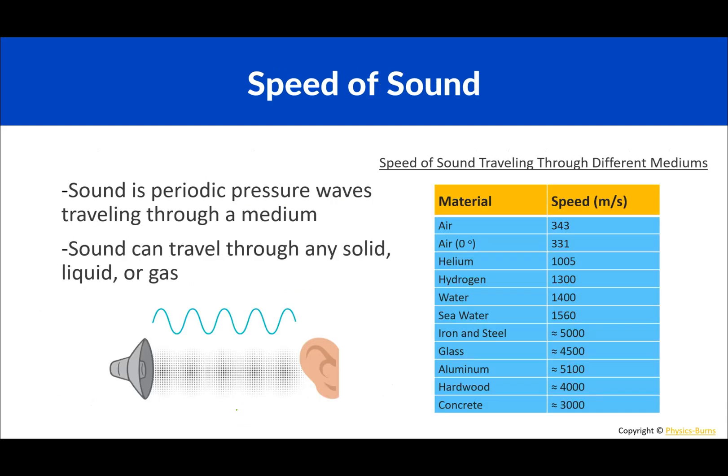Sound is periodic pressure waves traveling through a medium. Sound can travel through any solid, liquid, or gas. Typically in air it will travel 343 meters per second. This can actually change depending on how cold or hot it is, but we'll talk a little bit more about that later.